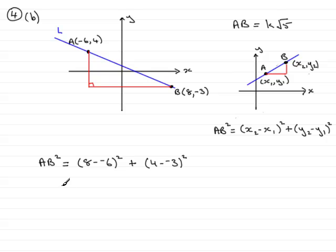So let's just work this out then. This is 14. So 14 squared is 196. And then this is 7. 7 squared is 49. So we end up with 196 plus 49, which is 245. So therefore, AB is going to be equal to the square root of 245.